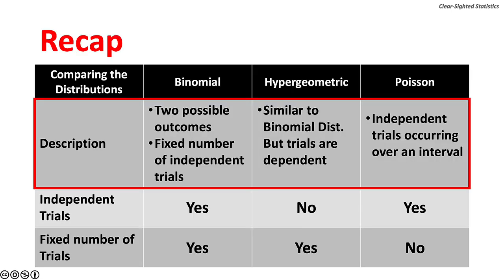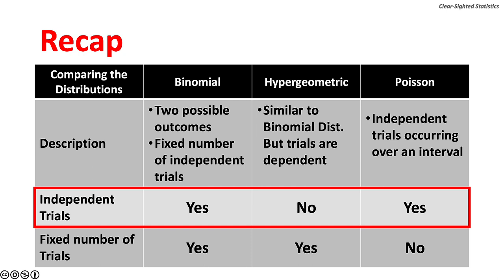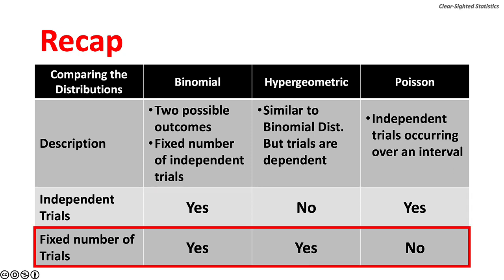Summary: binomial probability distributions have two possible outcomes and the trials are independent. Hypergeometric probability distributions are similar to binomial, except the trials are dependent. Poisson probability distributions have independent trials occurring over an interval. Trials for binomial and Poisson are independent; hypergeometric trials are dependent. Binomial and hypergeometric distributions have a fixed number of trials; Poisson distributions do not.